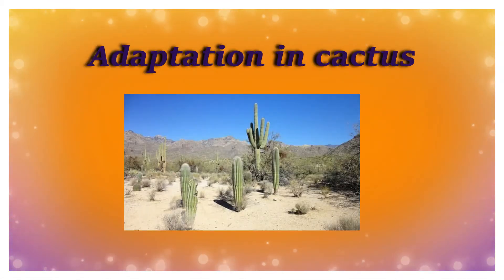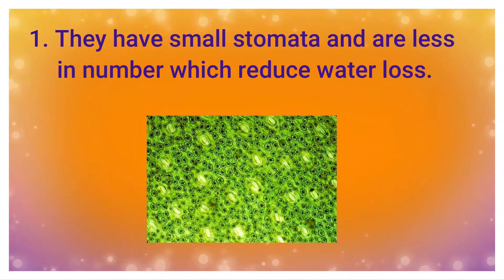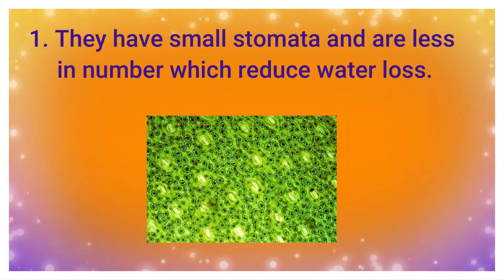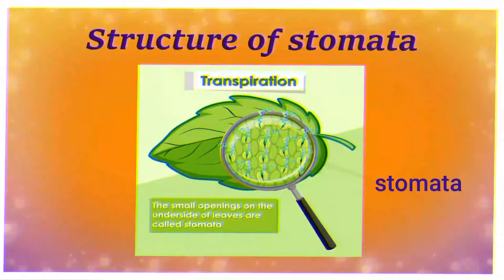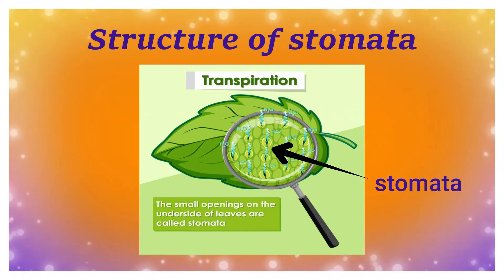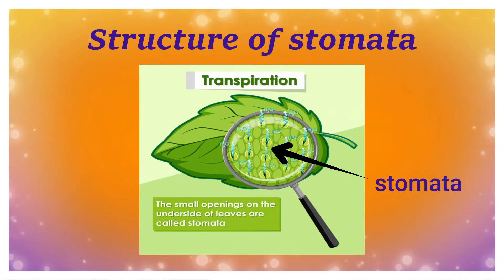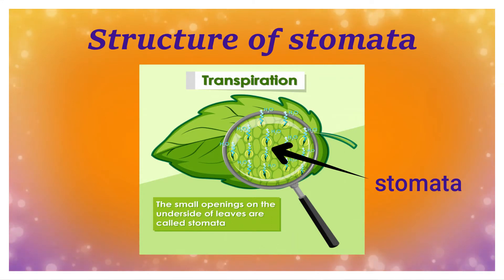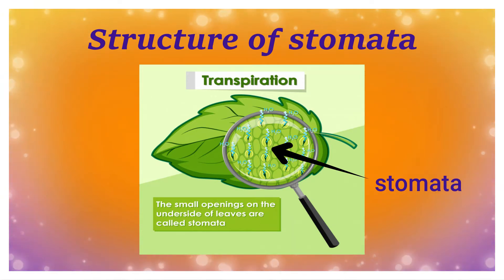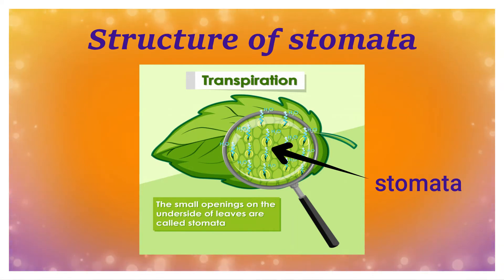So, adaptation in cactus: they have small stomata, and stomata are less in number, which reduces water loss. This is the structure of stomata — it is a tiny pore present in the leaf. Excessive water release in the form of water vapor is called transpiration. In cactus, small stomata are present, which reduce water loss and adapt the plant to the desert where low availability of water exists.